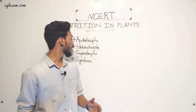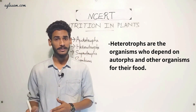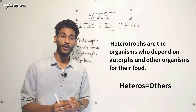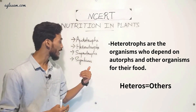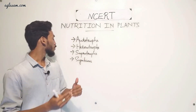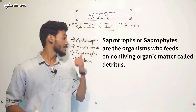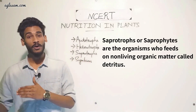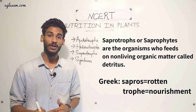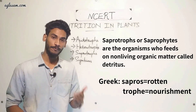Heterotrophs are the organisms that cannot make their own food and they depend on autotrophs and other organisms for their food. Saprotrophs are organisms that depend on decayed matter or detritus for their food.